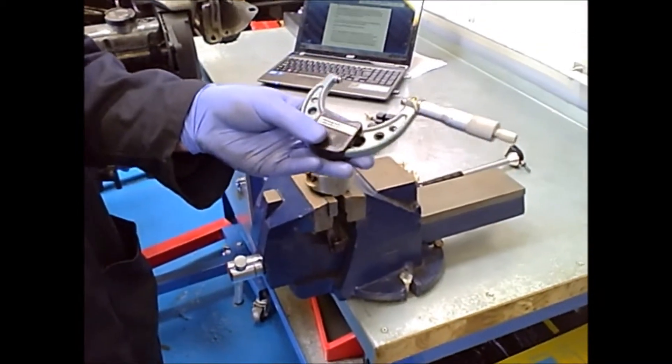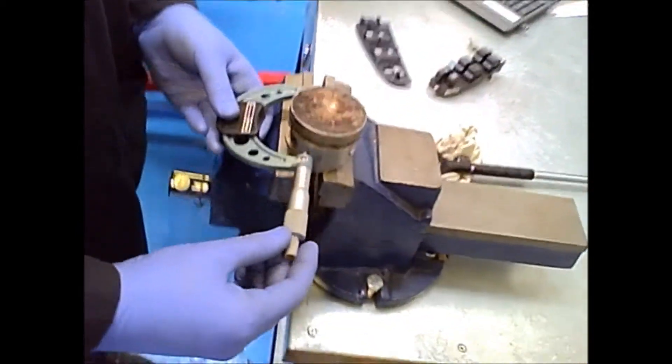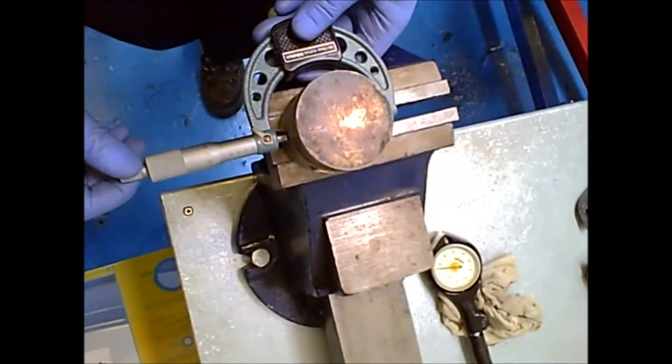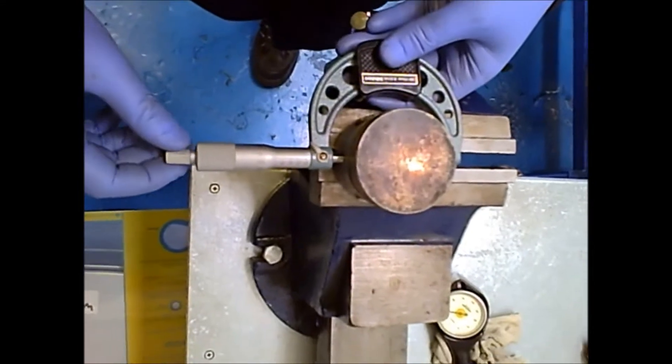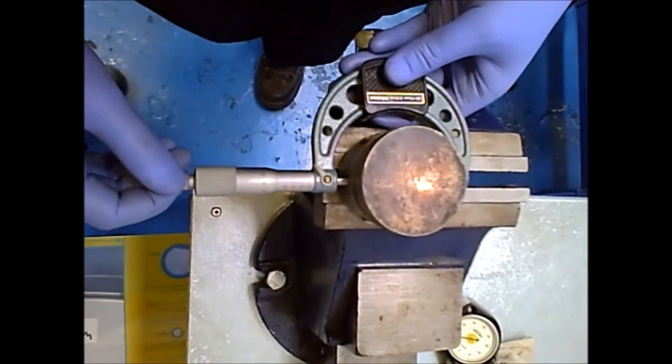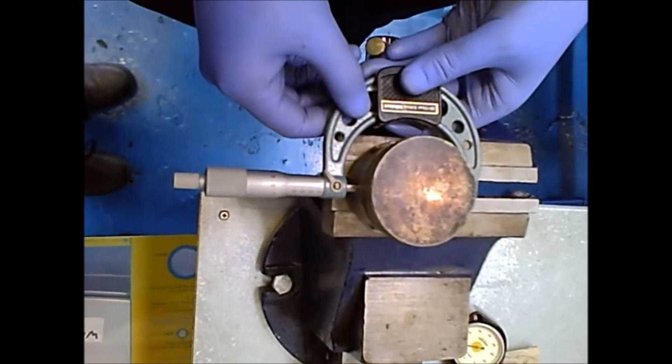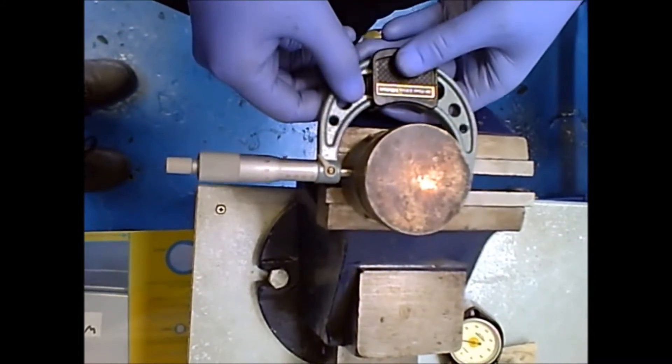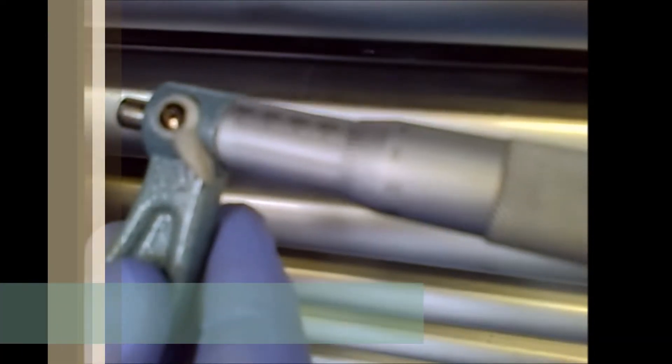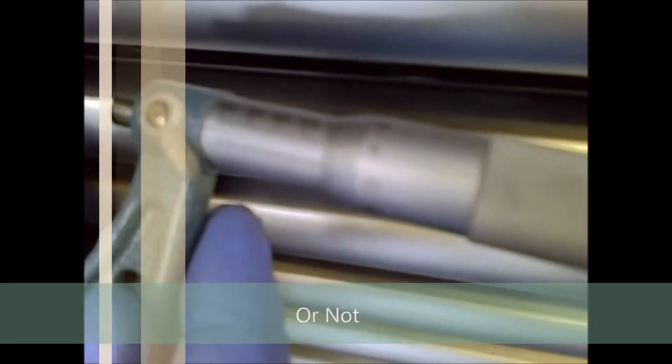Using the calibrated micrometer, you will want to close in onto the piston skirt using the ratchet so not to apply too much pressure to the jaws when coming in contact with the skirt. You are looking for a very light drag as you move the micrometer back and forth over the widest point. As you may be able to see, the measurement I have for this piston skirt is 69.98mm.